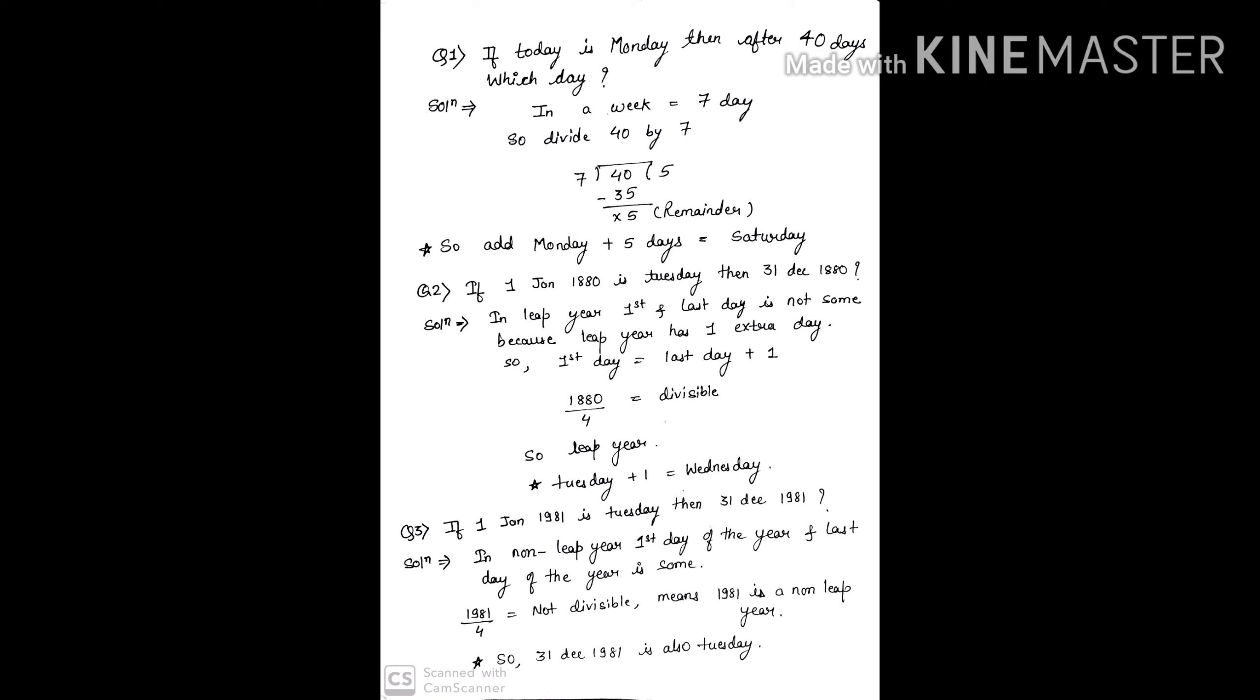So last day plus one should be your first day, that should be our formula or you can say a trick. So now to check whether 1880 is a leap year or not, we will divide it by 4.